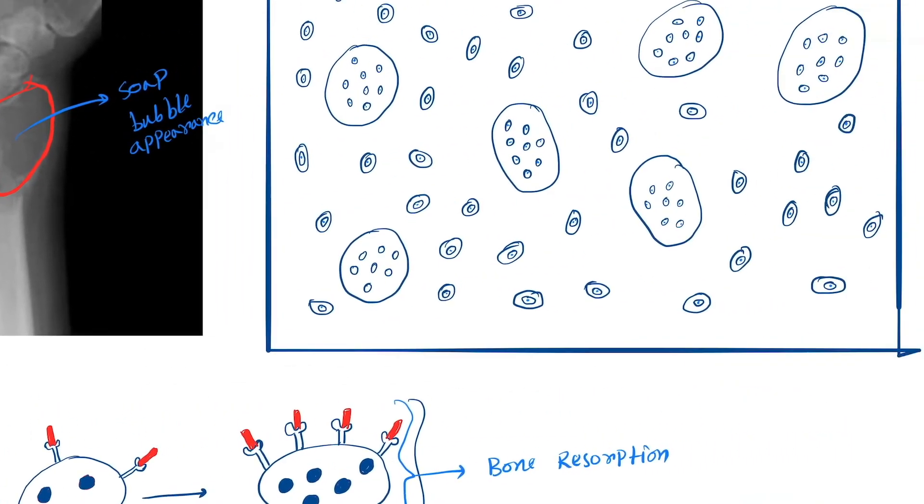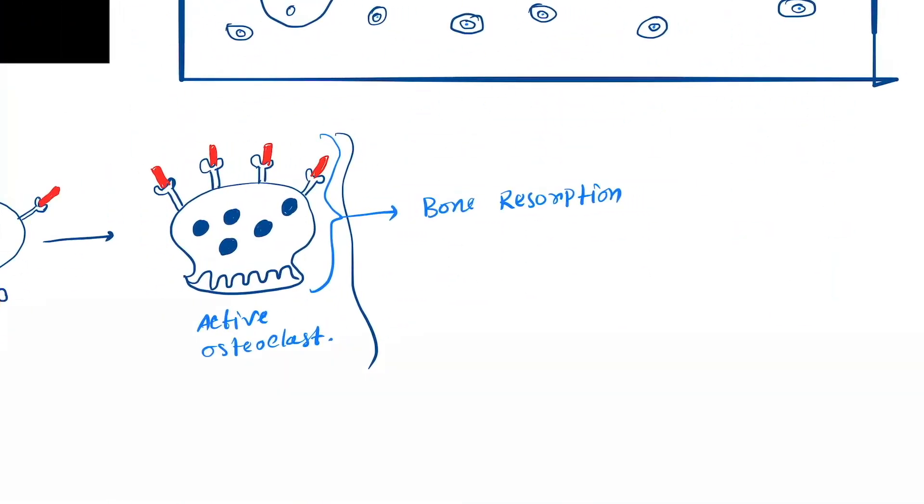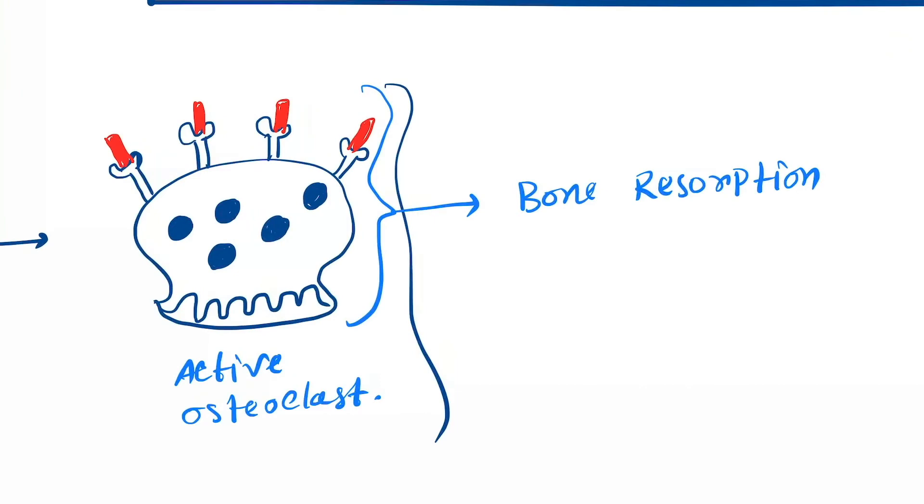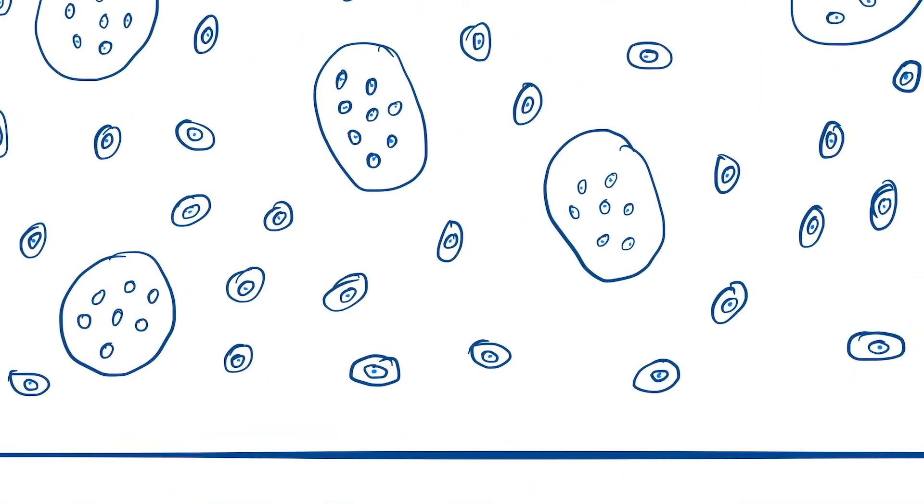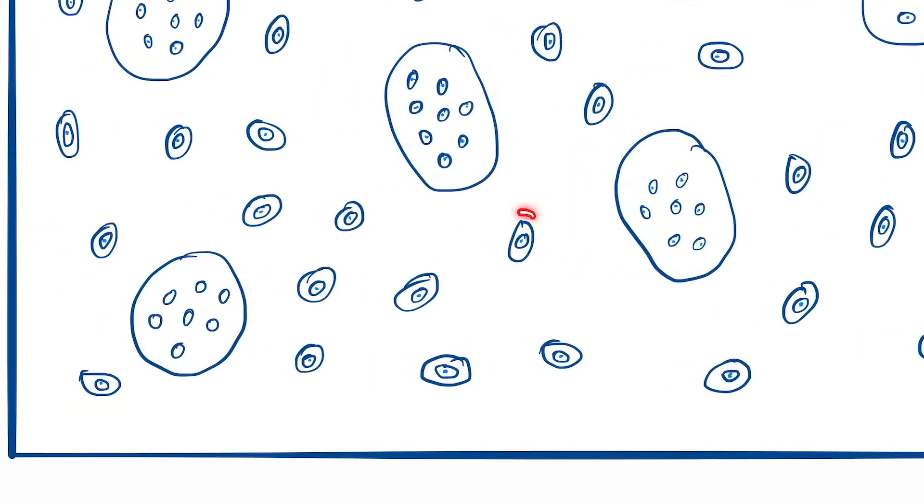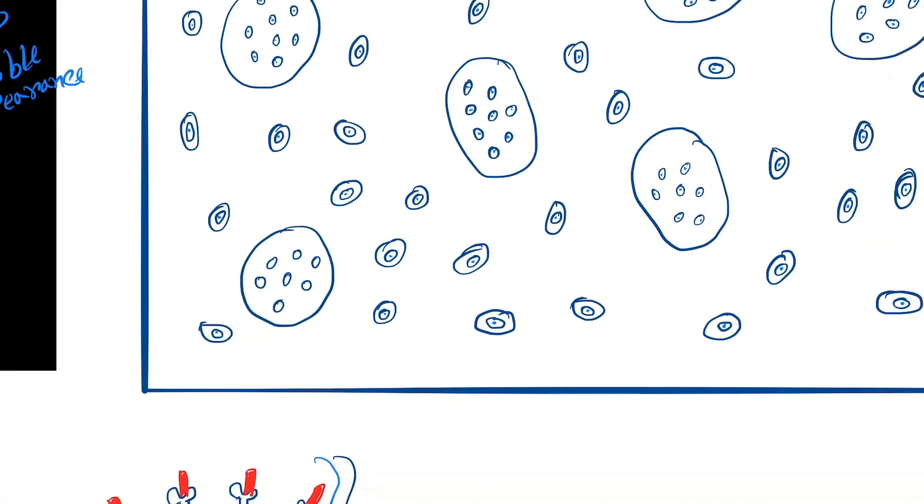Microscopic features show multinucleated osteoclastic cells in a background of neoplastic mononuclear cells. You can see that the nuclear size is increased compared to the cytoplasm.